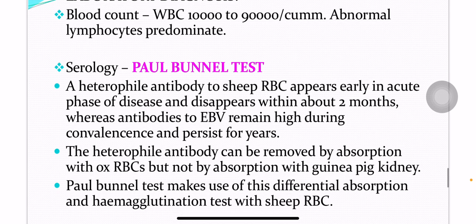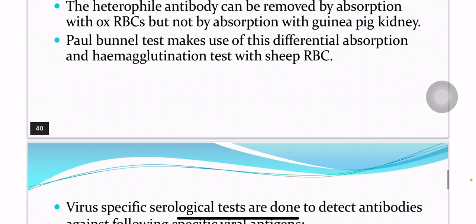A heterophile antibody to sheep RBCs appears early in the acute phase of disease and disappears within about two months, whereas antibodies to EBV remain high during convalescence and persist for years. The heterophile antibody can be removed by absorption with ox RBCs, but not by absorption with guinea pig kidney. The Paul-Bunnell test makes use of this differential absorption and hemagglutination test with sheep RBCs.